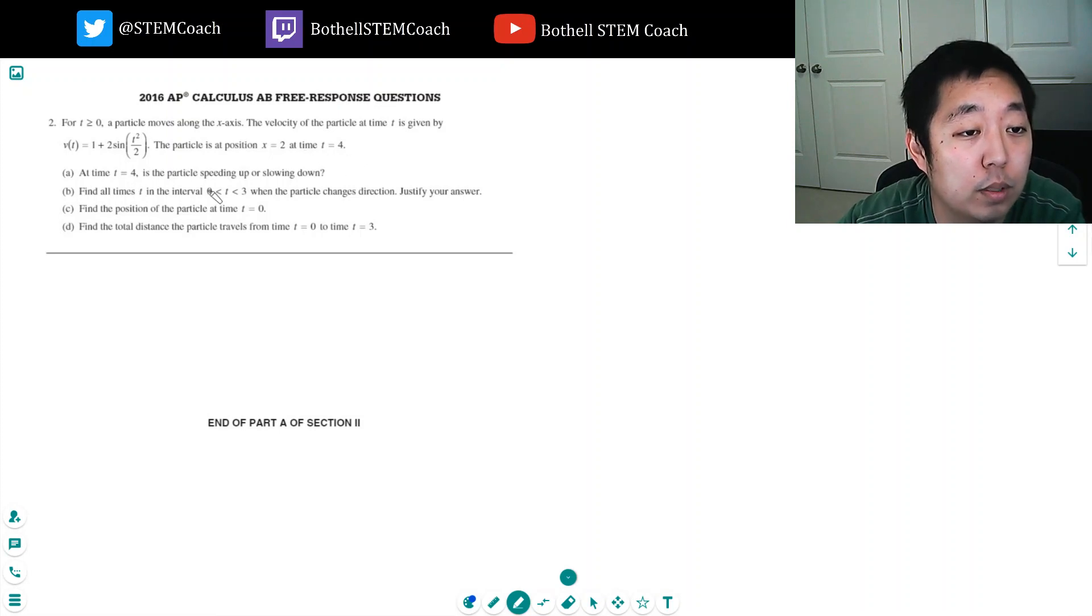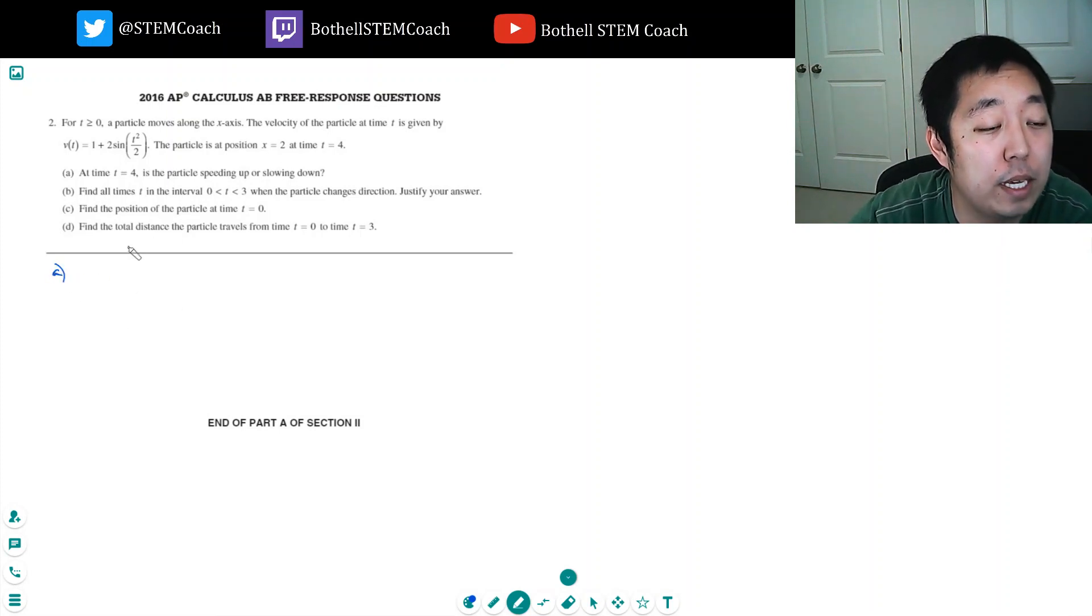At time t equals 4 is the particle speeding up or slowing down. To know about speed, remember speed is the absolute value of v(t). Speed doesn't have direction.